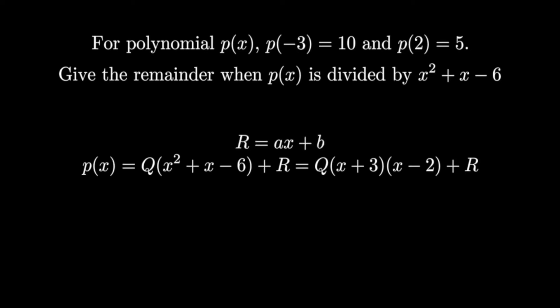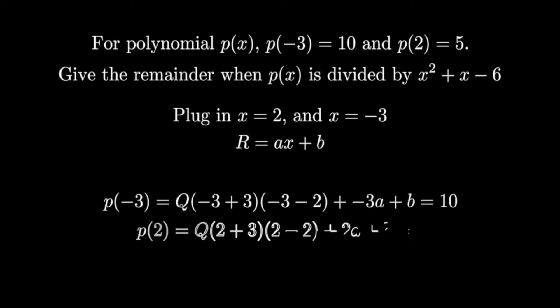Now, since p of x is divided by a quadratic, r has to be a linear function, which means we can say r is equal to ax plus b. Once again, if we were to plug in x equals 2 and x equals negative 3, we'd just get the remainder.